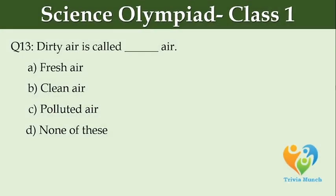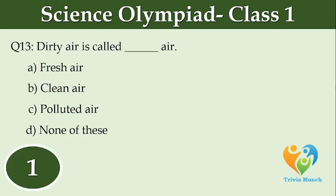Dirty air is called dash air. Option A: Fresh air. Option B: Clean air. Option C: Polluted air. Option D: None of these.